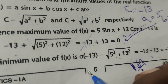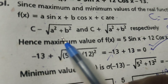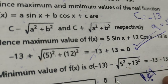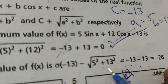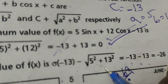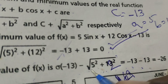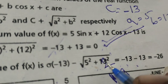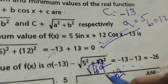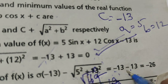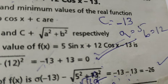Now finding the minimum value of f(x): using the formula c minus root of a² plus b², we get minus 13 minus the square root of 5² plus 12², which is minus 13 minus the square root of 25 plus 144, equals minus 13 minus the square root of 169, equals minus 13 minus 13, which gives minus 26. Therefore, the minimum value of the function is minus 26.